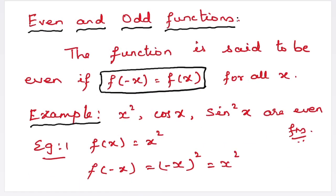Next, even and odd functions. A function is said to be even if it satisfies f(−x) = f(x). For example, x², cos x, and sin²x are even functions. Consider the function x². If f(x) = x², then f(−x) = (−x)² = x², which is equal to f(x).